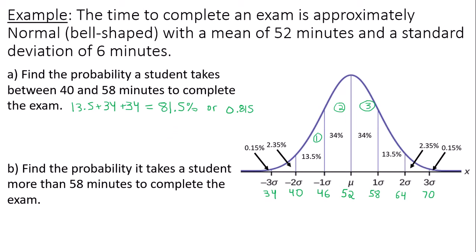Now what about the probability it takes a student more than 58 minutes? So find 58 along your x-axis, and we include everything to the right of it because we want more than 58 minutes. So that's region 1, region 2, and then our little tiny tail is our third region. So add up those percentages. You have 13.5 plus 2.35 plus 0.15. That's going to add up to give you a grand total of 16% or in decimal form 0.16.